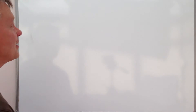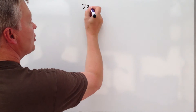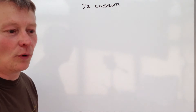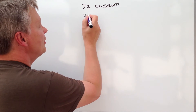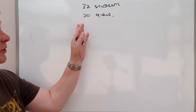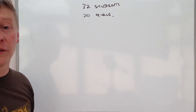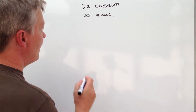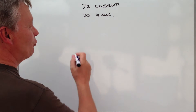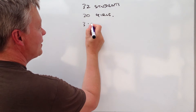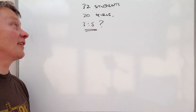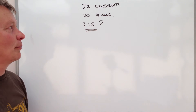This particular problem says that there are 32 students in a class, and 20 of the students are girls. So we've got 20 students who are girls, 32 students altogether. The question says that Rosie claims the ratio is 3 to 5. The question is: is this correct?